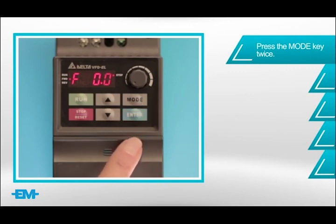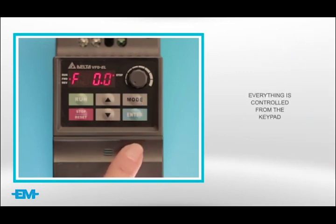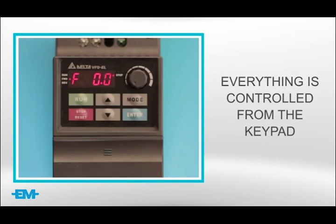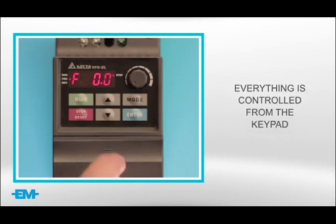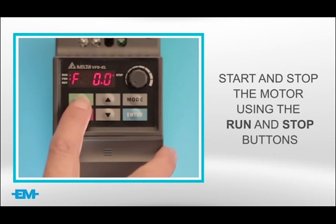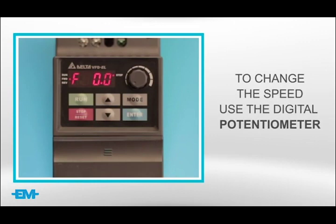Now we are going to demonstrate that our settings are working and everything is controlled from the keypad. To start and stop the motor on the keypad, use the run and stop buttons. To change the speed, use the digital potentiometer.